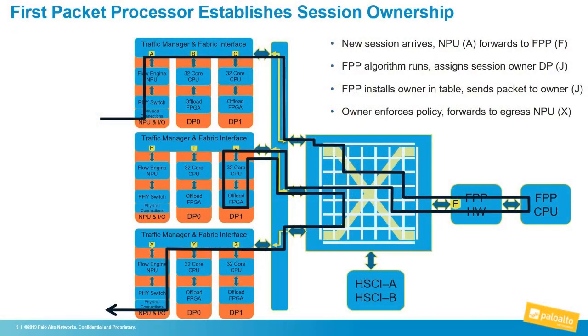When traffic comes into a PA-7000, that line card has a network processor on it. It maintains state, and it's going to look up to see whether or not it's seen that traffic before. If it hasn't, then it's going to send it to the first packet processor. Now, that could already be traffic for an active session on a different line card — it's not automatically new. So the FPP is going to look at its global table to see if there is already a session. If there is, it just forwards that traffic to the appropriate card and sends a message back to the receiving card so that in the future, if it gets more traffic, it'll know about it.